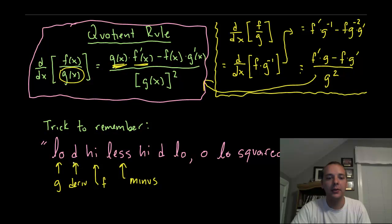When you say d high, I'm referring to the derivative of F. So low d high, less, that's minus, then high, that's F of X, d low, derivative of the denominator, that's g prime.